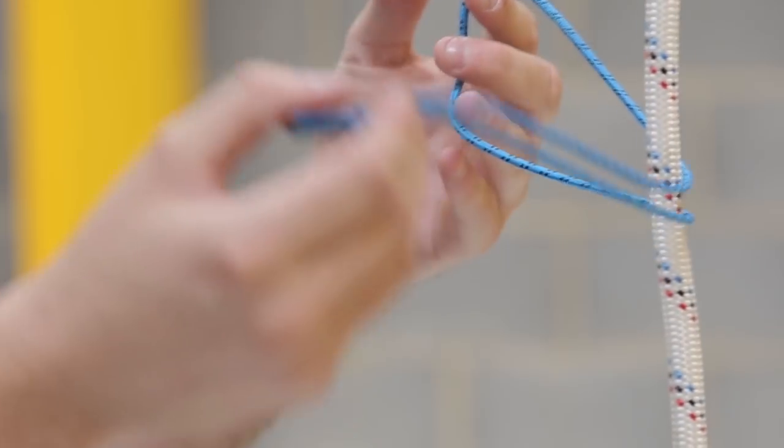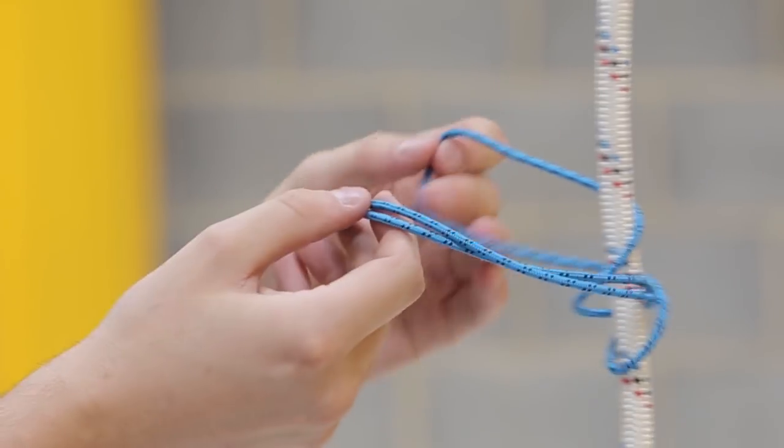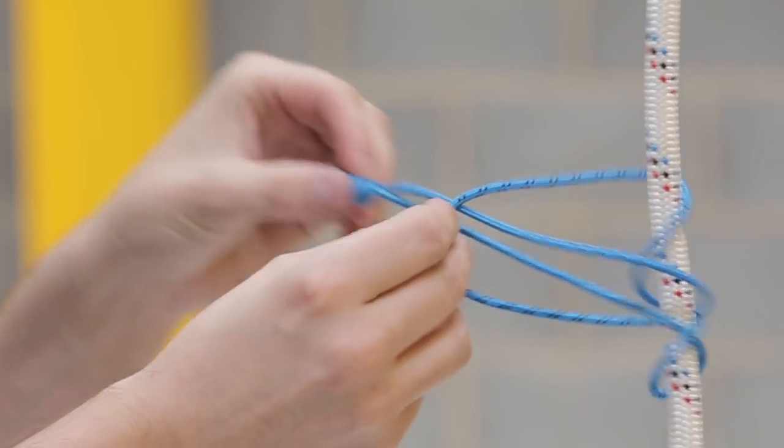Make a loop. Pass the other end of the loop around the rope two times inside the loop. Make sure the turns lie neatly beside each other and pull the knot tight.